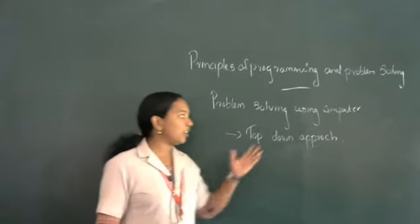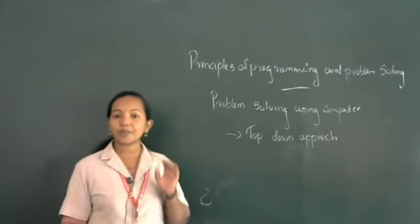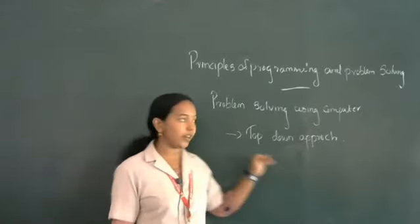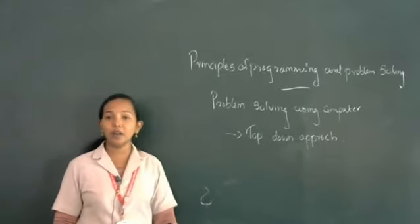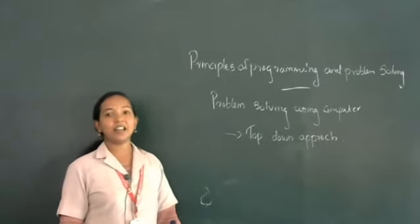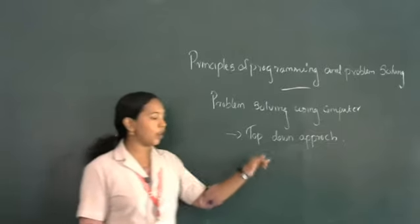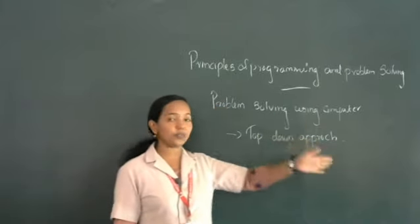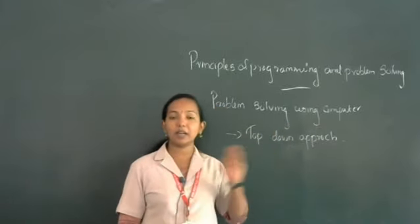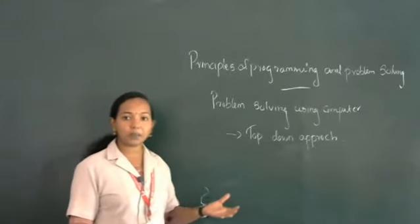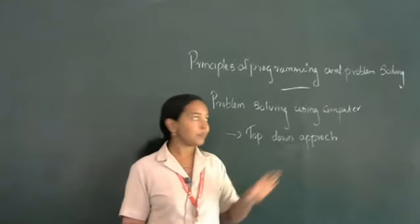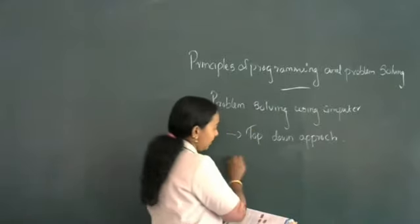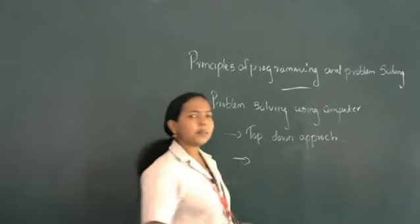In the top-down approach, complex programs are divided into small sub-programs, and then we implement them step by step. We start from the highest level — the top — and by step by step we connect all the other parts. That kind of design or approach is known as top-down design.